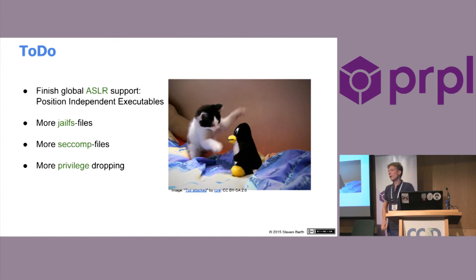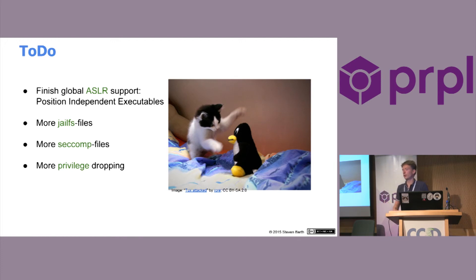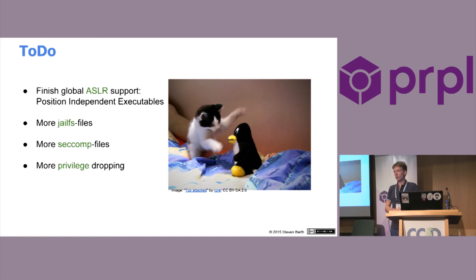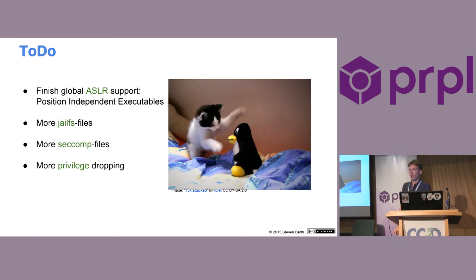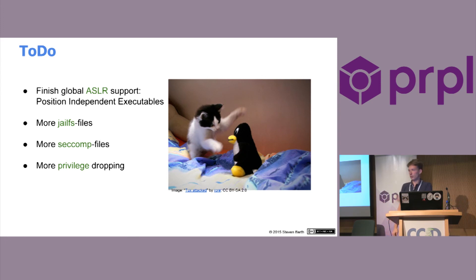Why is position-independent executables necessary? If you have an exploit, most exploits rely on being able to call some functions anywhere or assemble exploit code from code anywhere. The point of address space layout randomization is that the code or functions aren't at fixed positions. The libraries and code are moved around randomly at startup. For libraries that is always done because libraries are relocatable code, but at the moment the executables aren't relocatable, so they have fixed addresses. This is to get rid of that.